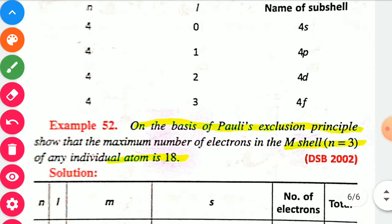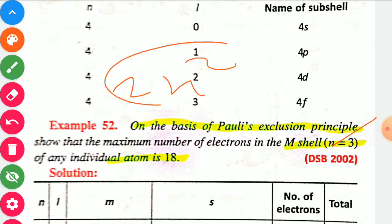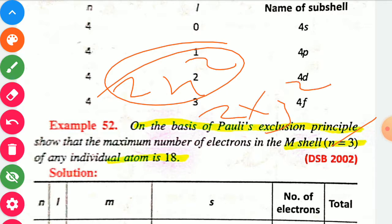Question 4: On the basis of Pauli's Exclusion Principle, show the maximum number of electrons in the M shell (third shell, n equal to 3). Using the formula 2n², total electrons equal 2 into 3 squared equals 2 into 9 equals 18 electrons.